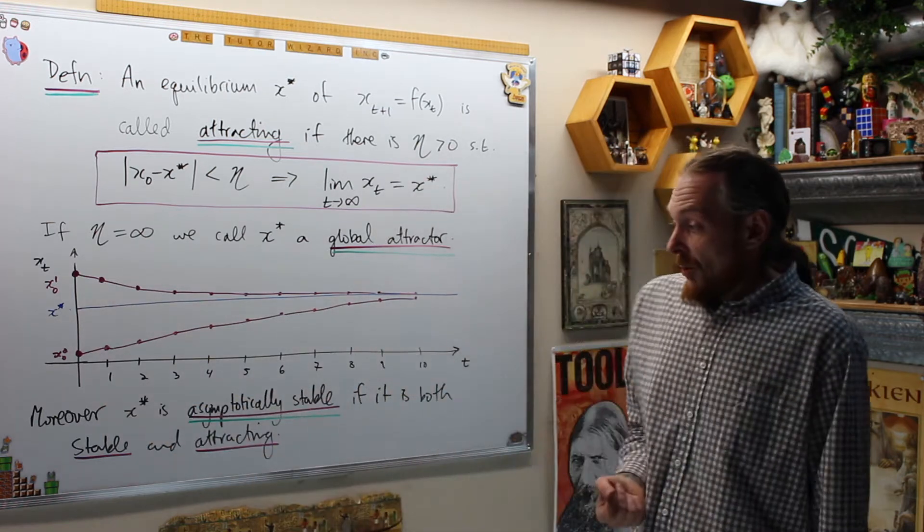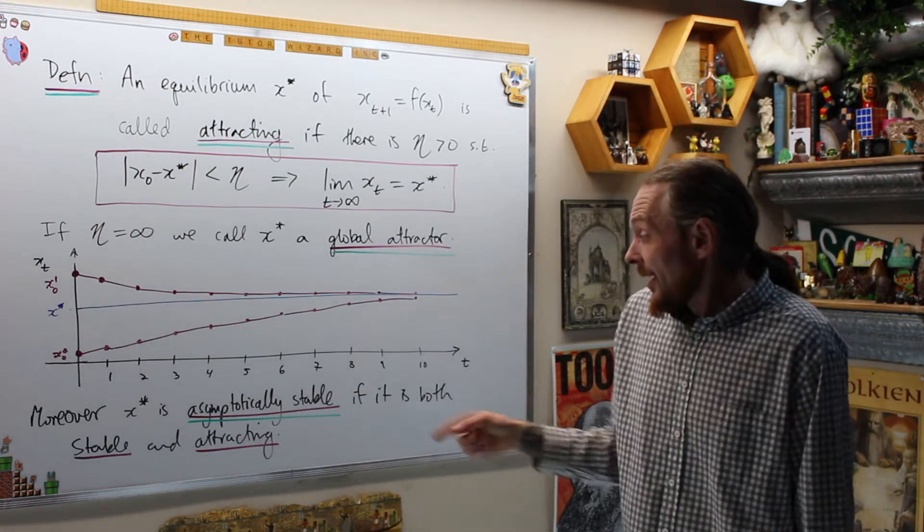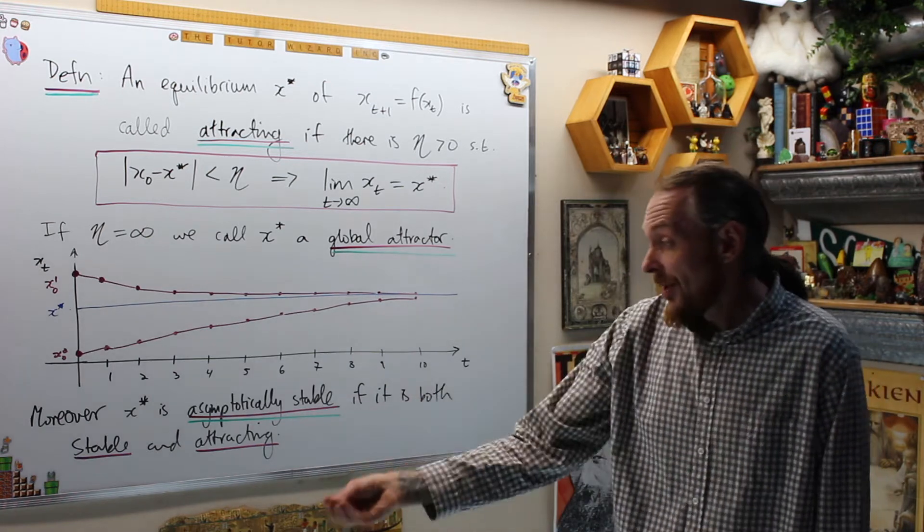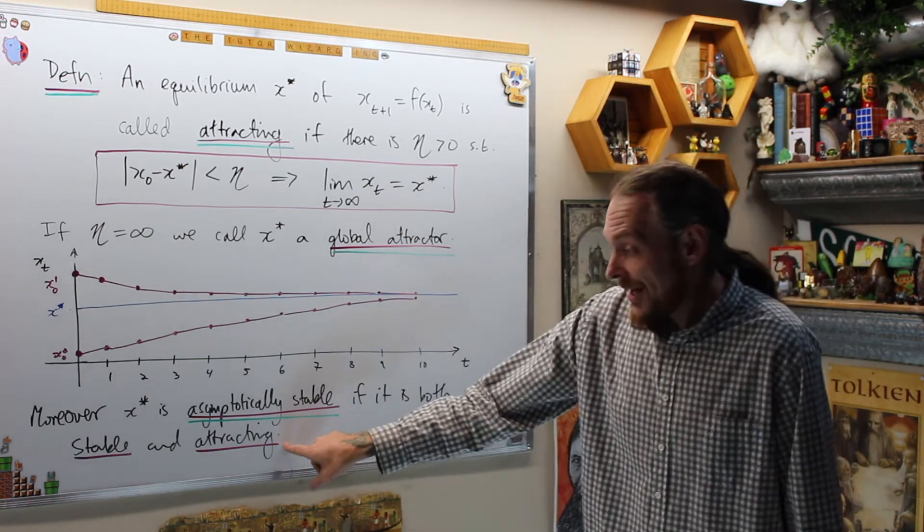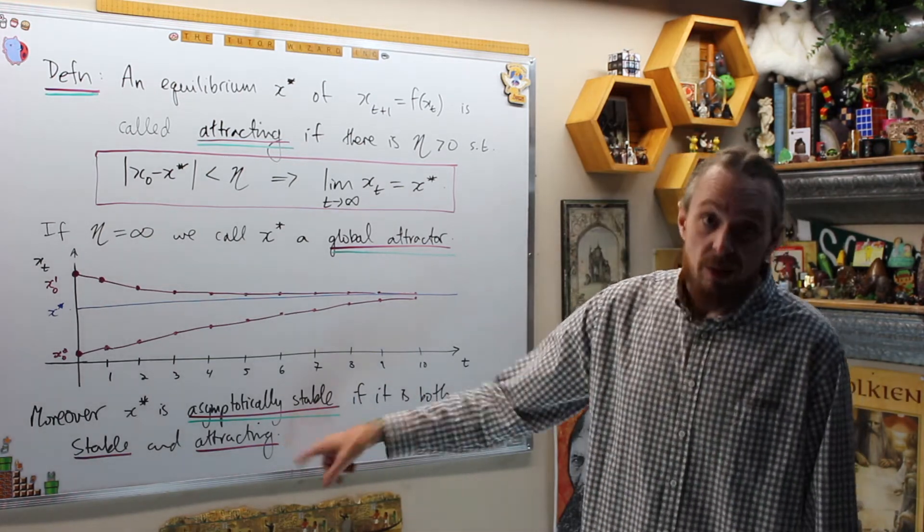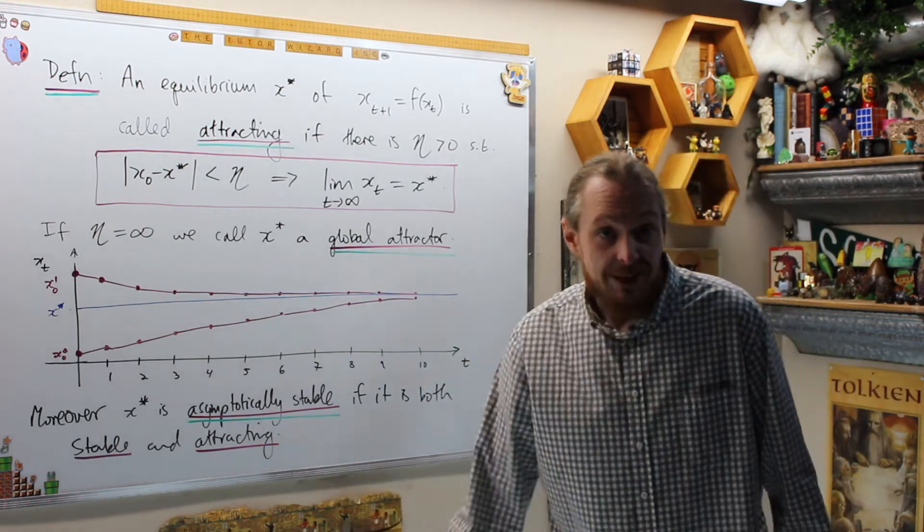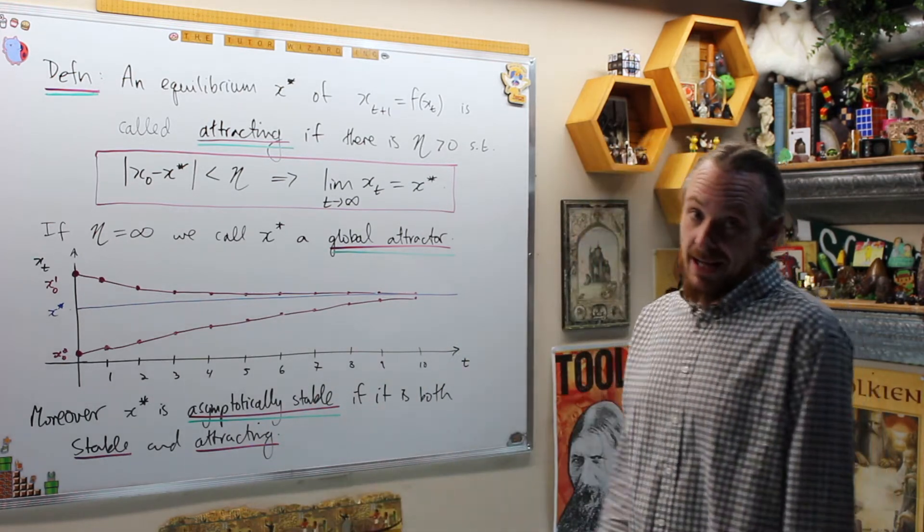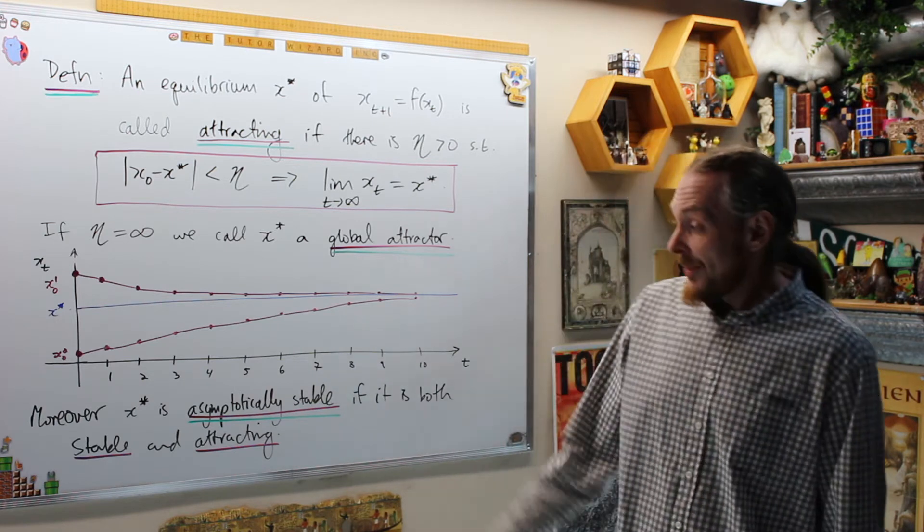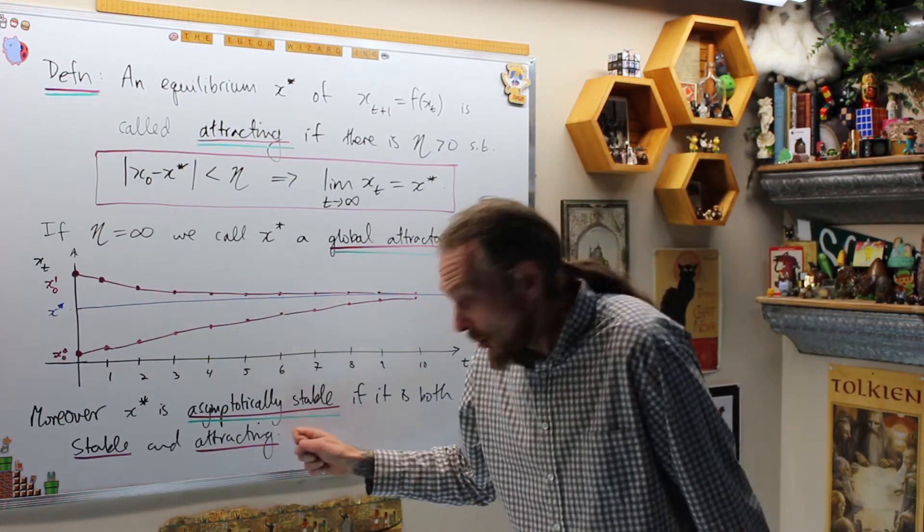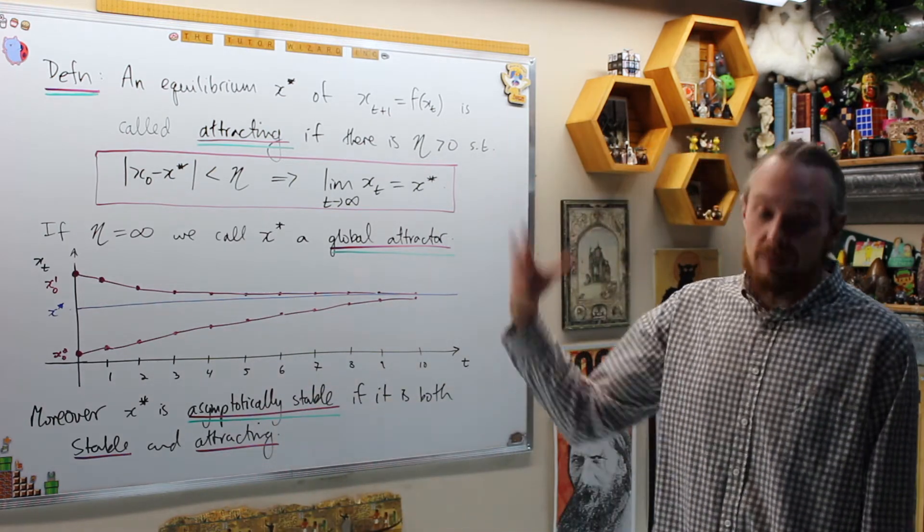And finally, what we're going to call asymptotically stable is going to be if it's both stable and attracting, and if that's attracting, if it's a global attractor, we're going to call it globally asymptotically stable, or GAS, G-A-S. Globally asymptotically stable means that it's stable and it's globally attracting. Let's do an example.